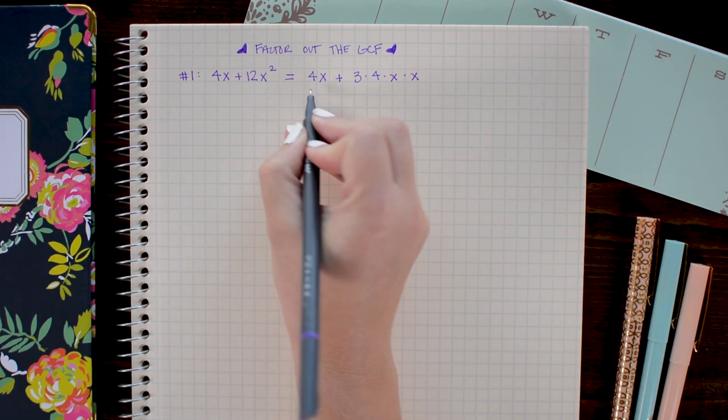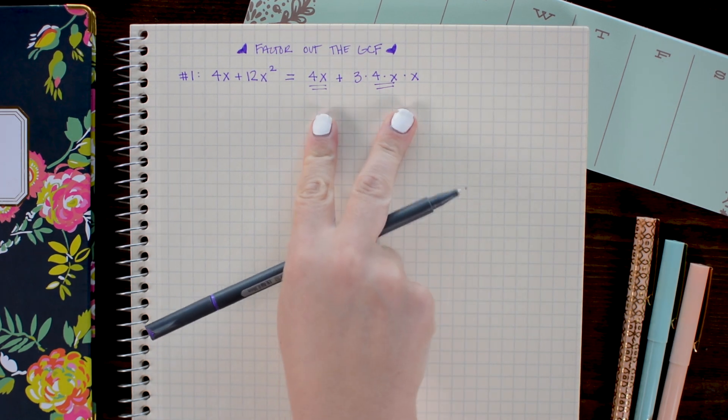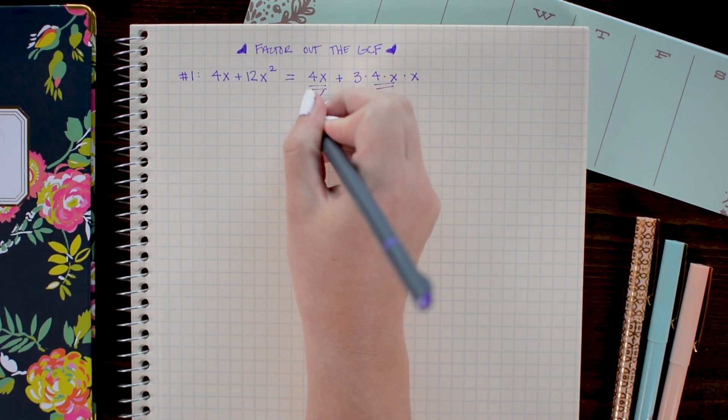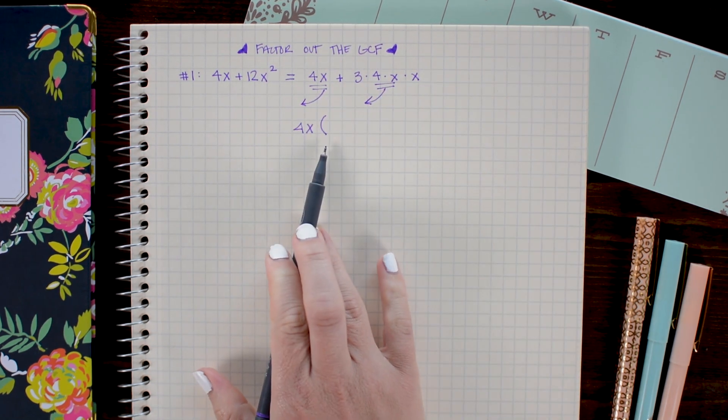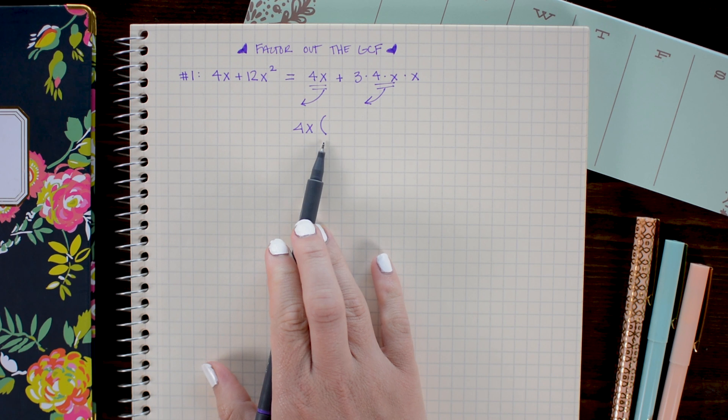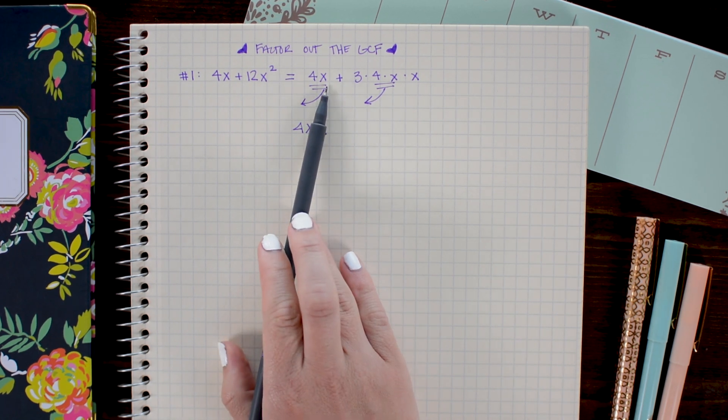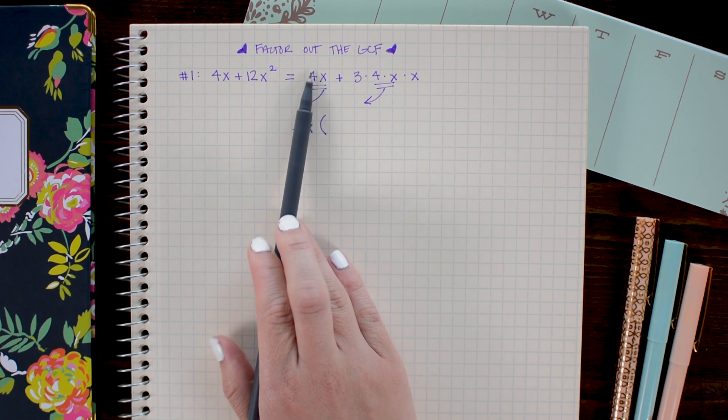Now I can see that there is a 4x in both of these terms. So the 4x is what I'm going to pull out in front. What's left behind, I will place in parentheses. And a common mistake here would be to pull out the 4x and not leave something behind.